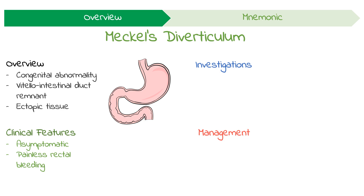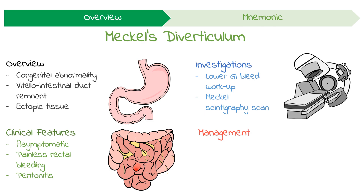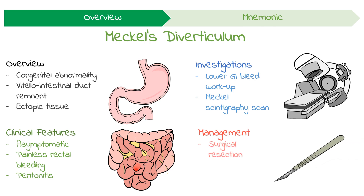Rarely, this can cause perforation and peritonitis. It should be investigated like any patient with lower gastrointestinal bleeding. Specifically though, a Meckel's scintigraphy scan using technetium should also be considered. All symptomatic or complicated cases of Meckel's diverticulum must be surgically resected. Patients who are hemodynamically unstable might also require blood transfusion.